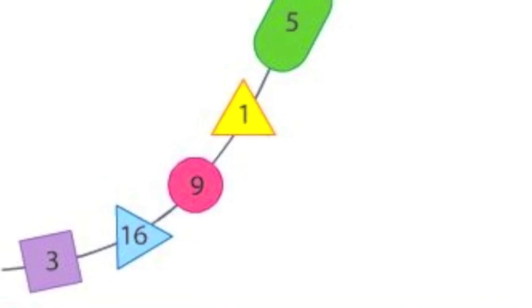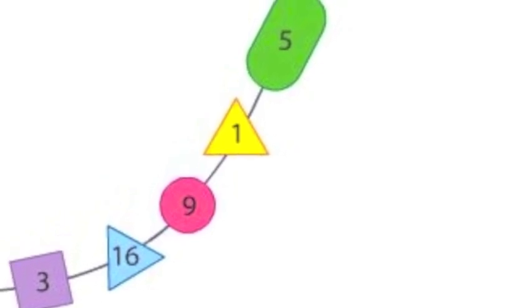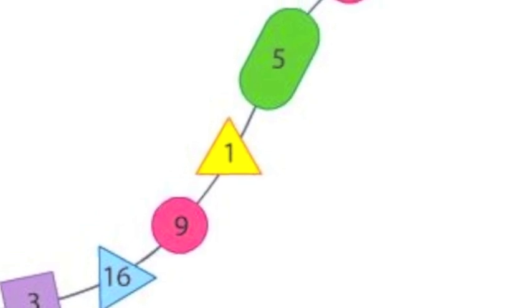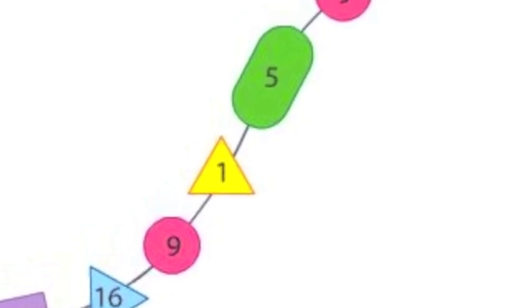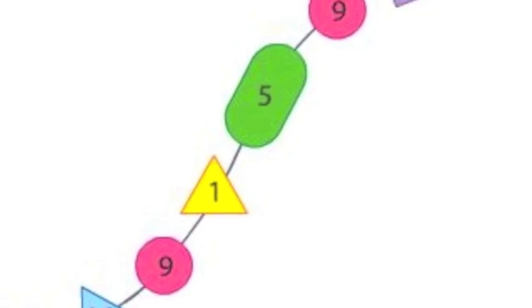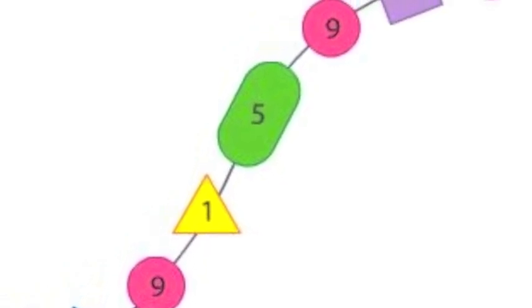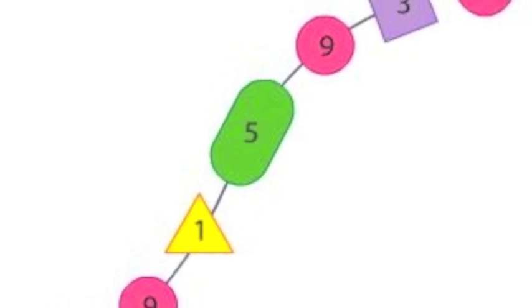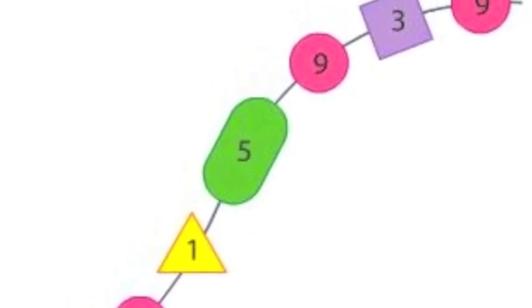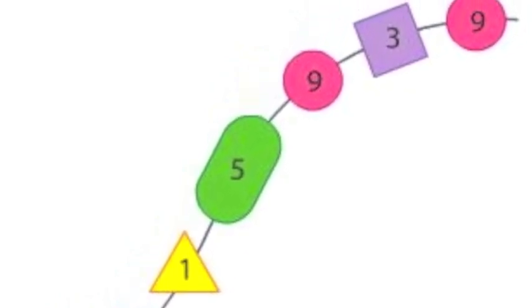Proteins are made of long chains of tens to hundreds of amino acids joined up in a particular order. There are about twenty different amino acids. The order of amino acids is different for each protein, and it is this order that controls the structure and function of the protein.